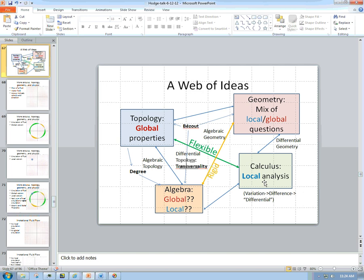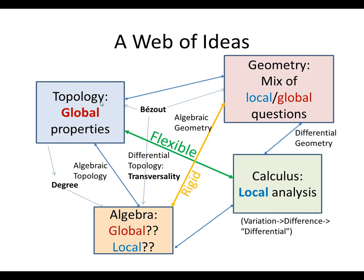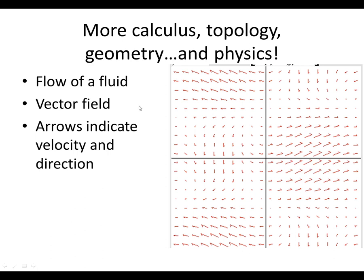The tools actually go back to Hodge as well, in theorems that he proved, not just conjectures. So let's do a little bit of a digression on more calculus and how it relates to topology, geometry, and actually physics. I'm going to use a very physical model to think about this — I want to think about the flow of a fluid.